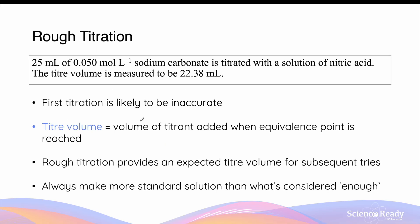Let's use an example to go through the concept of rough titration. 25 millilitres of 0.05 mol per litre of sodium carbonate — this is my standard solution — is titrated with a solution of nitric acid, which will be my unknown solution. The titrant volume is measured to be 22.38 millilitres. The first titration will be inaccurate because it will be the rough titration. The titrant volume is the volume of titrant added when the equivalence point is reached, and in the case of an indicator titration, this is when the indicator changes colour.